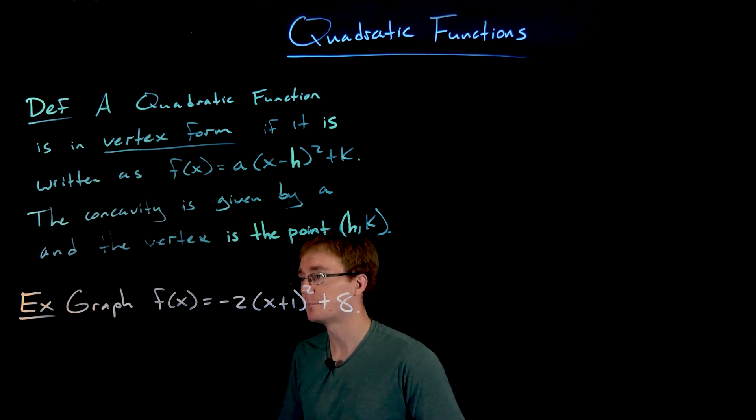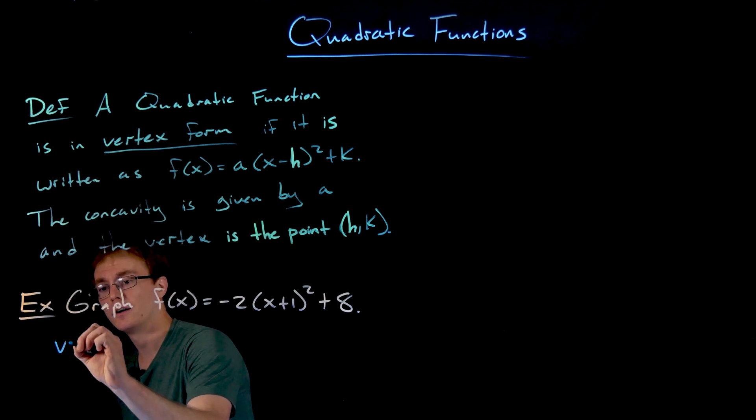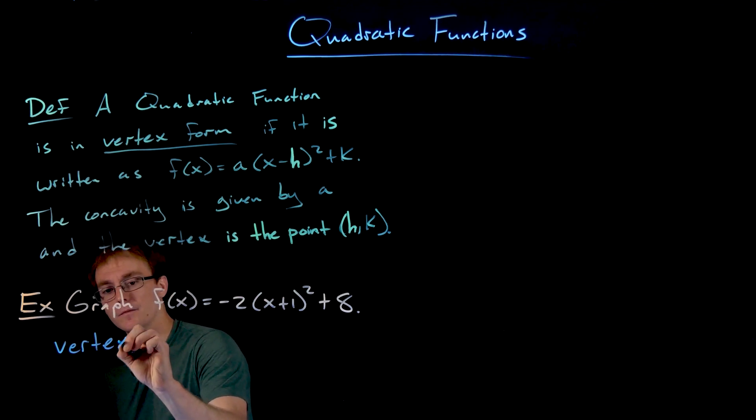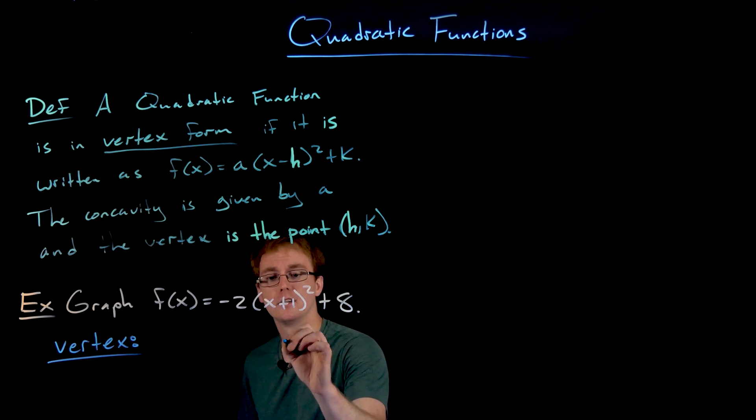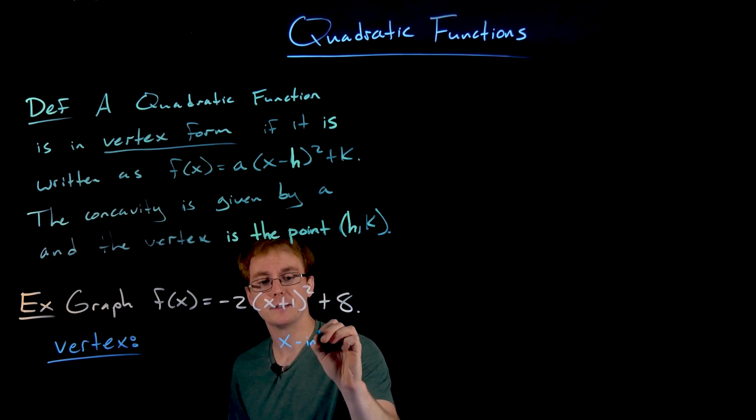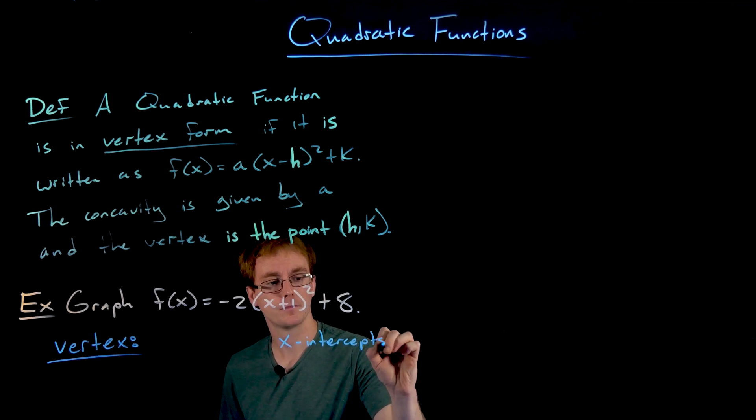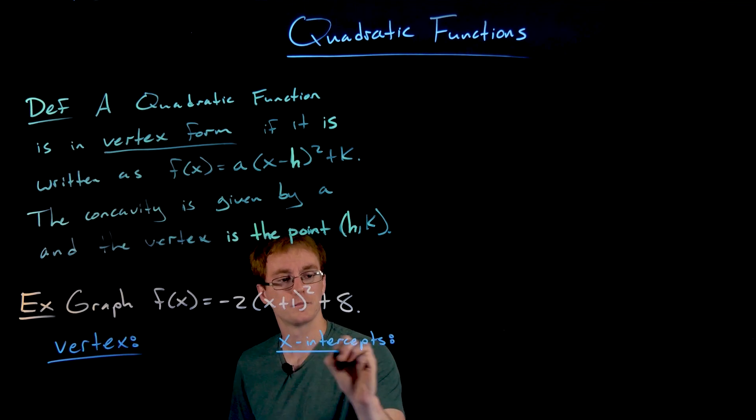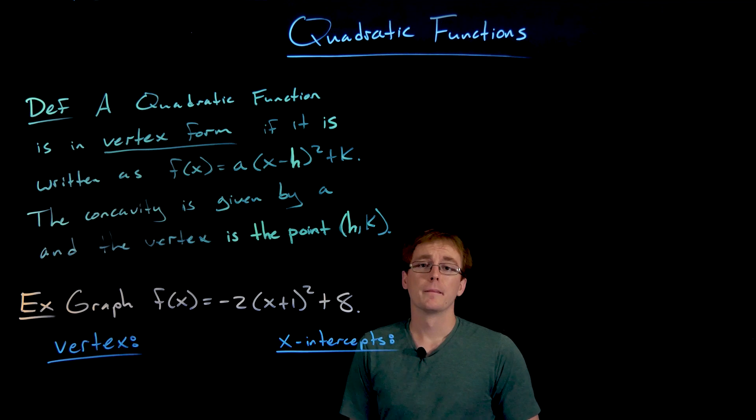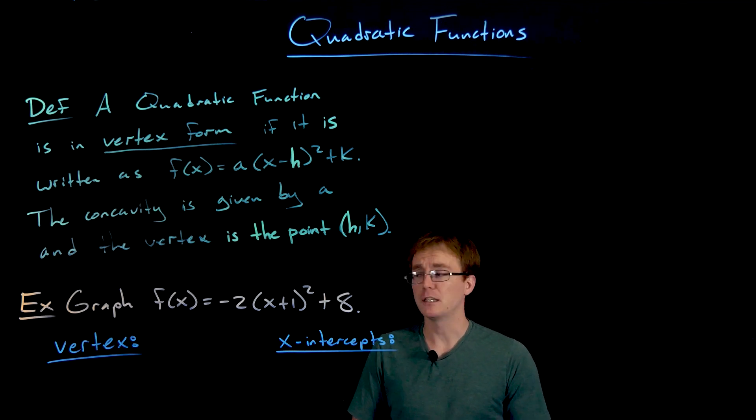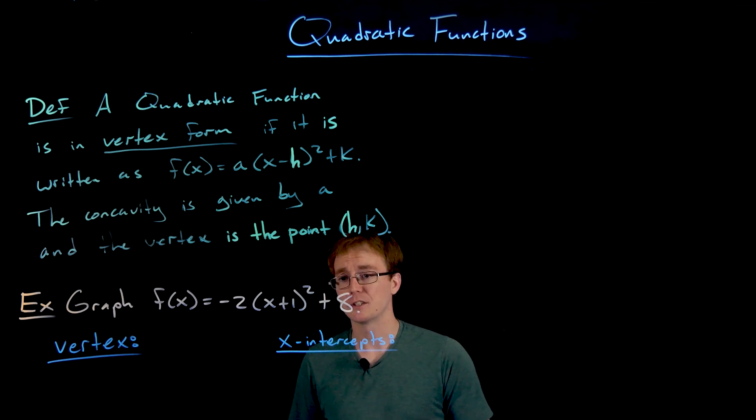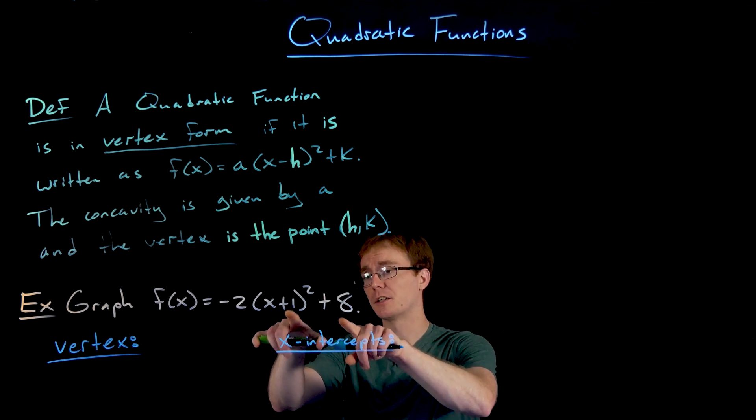We still need those same pieces of information as before: the vertex and a pair of symmetric points, which ideally will be the x-intercepts. The nice thing about this vertex form is we basically get for free what the vertex of our parabola is going to be, as long as we read our equation correctly.